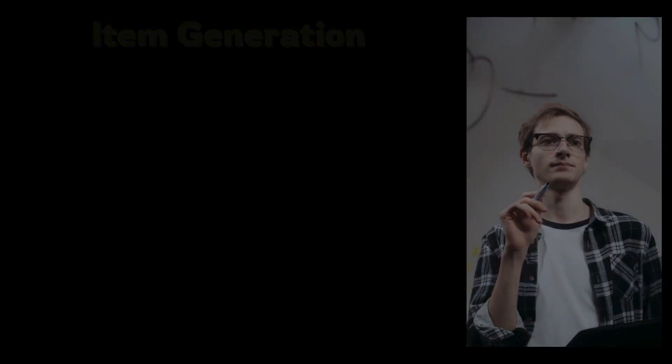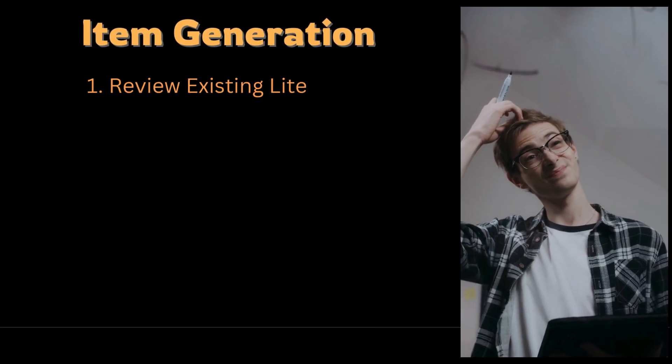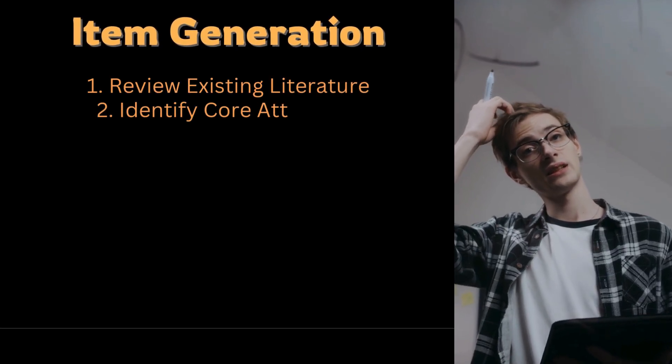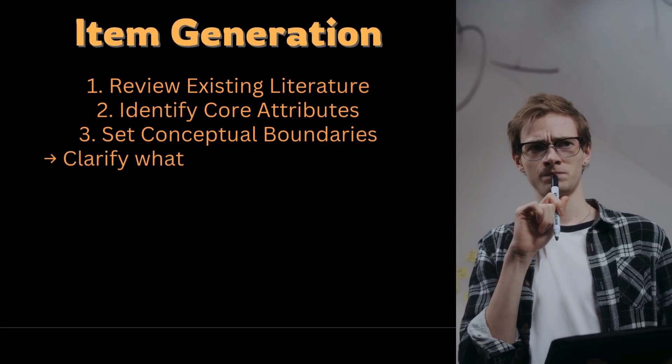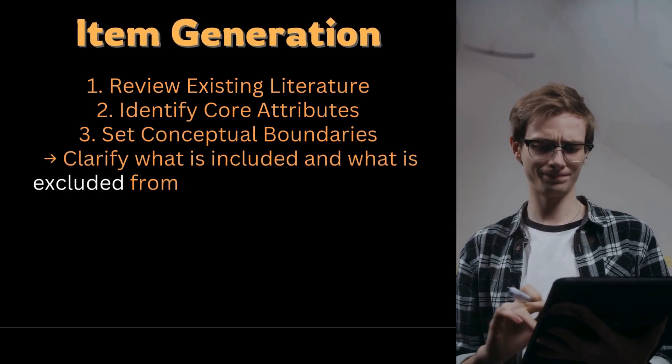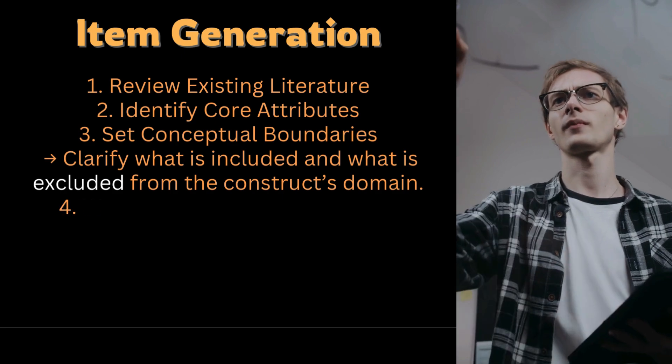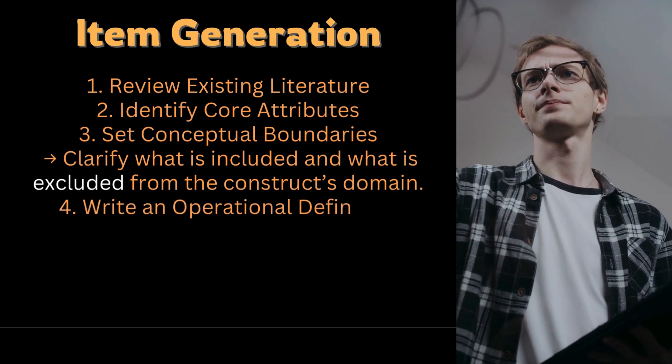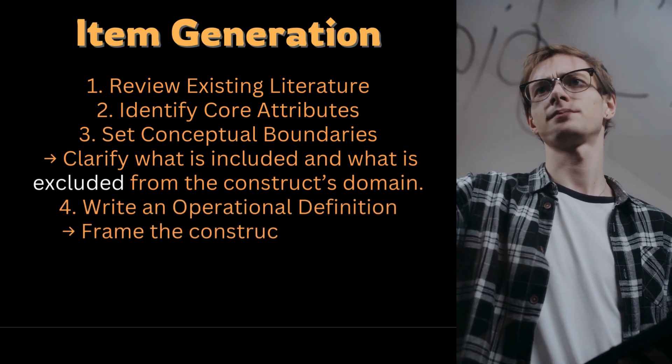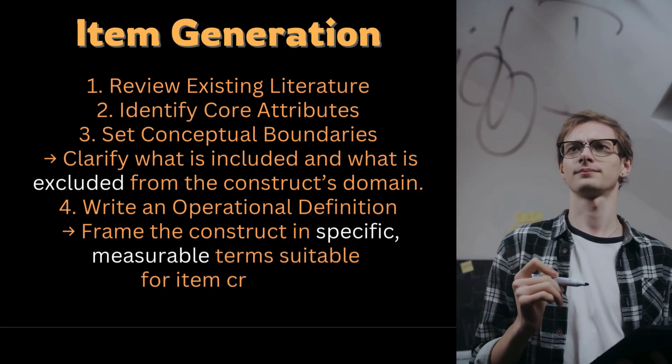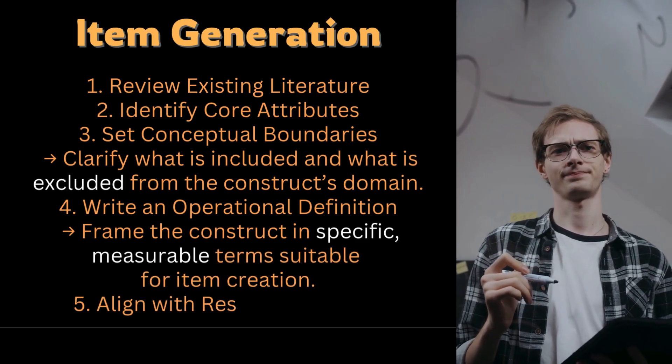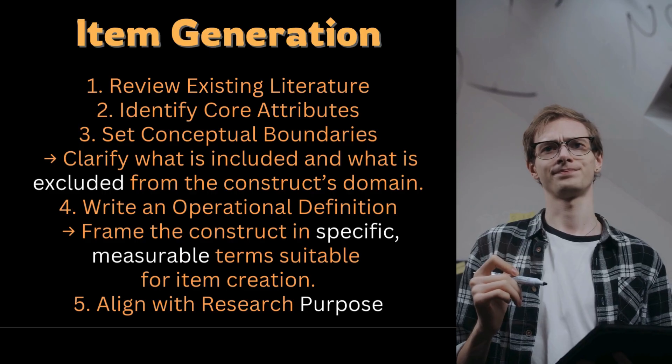The item generation begins with review of existing literature. We then identify the core attributes. We set conceptual boundaries, clarifying what is included and what is excluded from the construct's domain. We then write an operational definition and we frame the construct in specific measurable terms suitable for item creation. And then we align it with the research purpose.